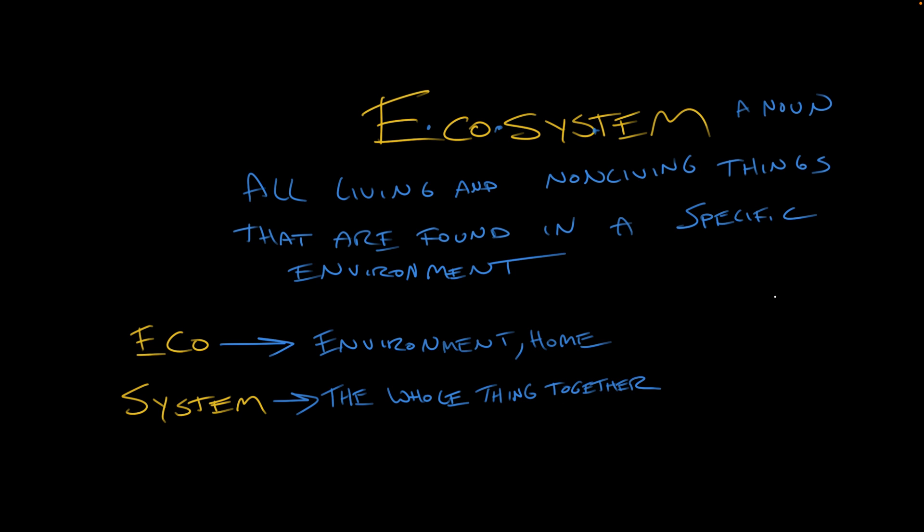Basically, system is composed of word parts that mean a thing that sticks together. So an ecosystem is the way a home, an environment, works all together as a single unit. The fish eat the bugs, and the bugs pollinate the plants, and the plants feed the monkeys, and the monkeys distribute the seeds. A system. An eco-system.